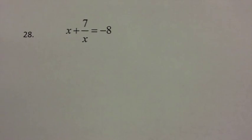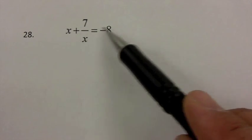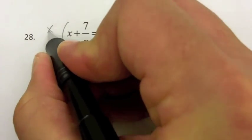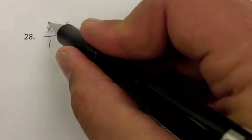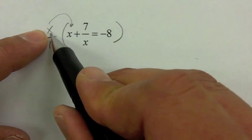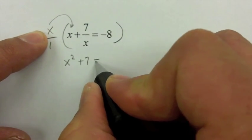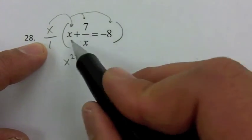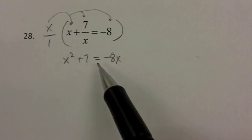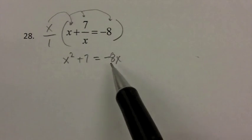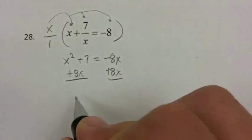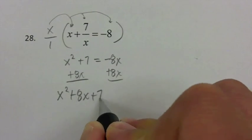Let's take a look at question 28. Again I have a fraction in the equation, so I want to clear it. The LCD is simple here — the only denominator is x, so that's my LCD. I'll multiply everything by x. The first term gives x times x, which is x squared. For the next term, that common factor of x divides out, leaving just plus 7. And then x times negative 8 gives negative 8x. So I have x squared plus 7 equals negative 8x.